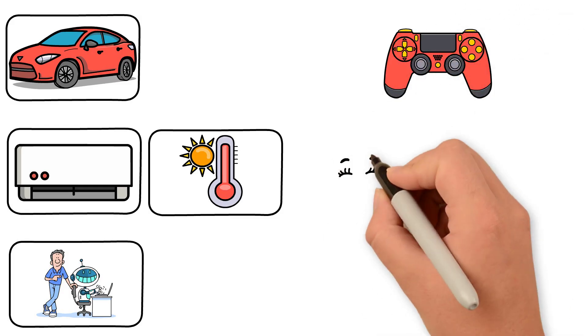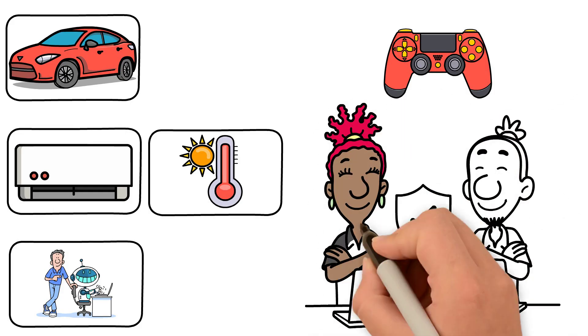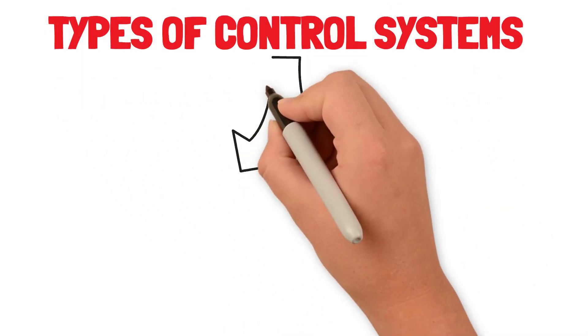So if you think about it, control systems are like smart helpers that make sure everything runs just right. Types of control systems. Now let's break it down. There are two main types.